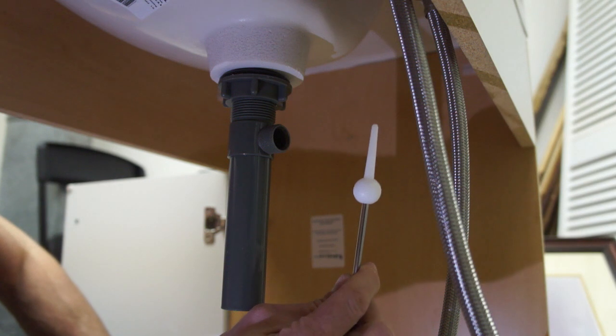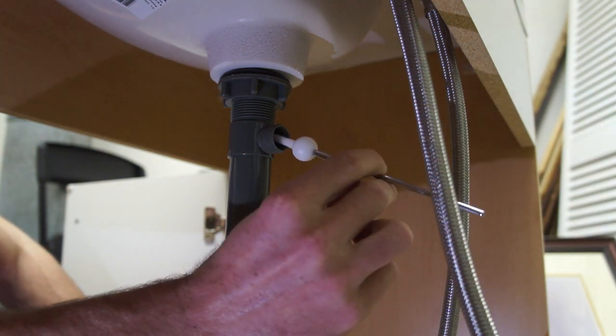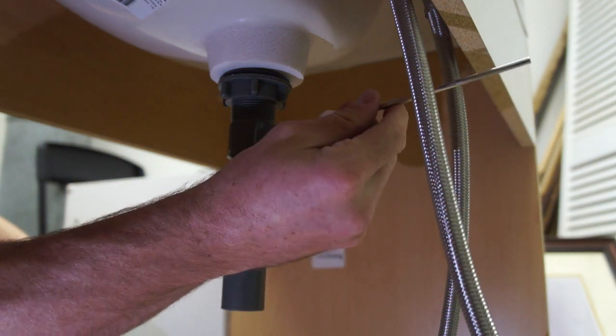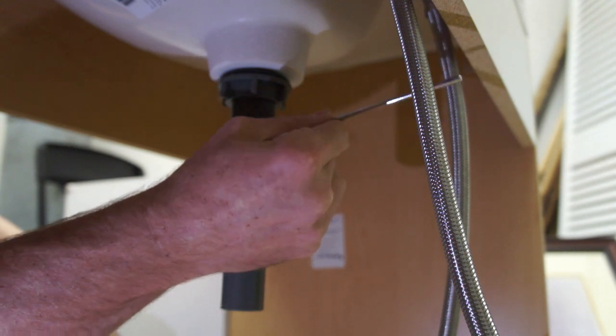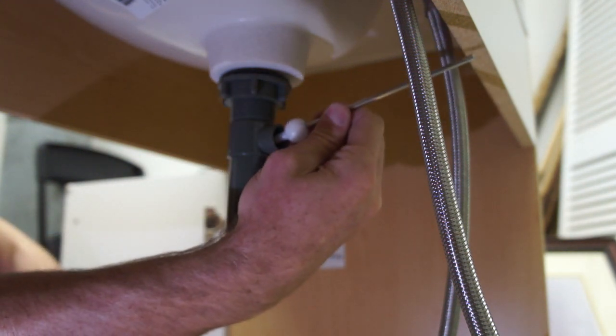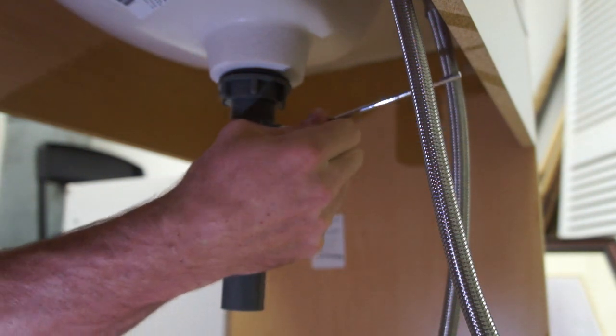Okay, we're going to put the stopper actuator rod piece into this hole in the back and when we do that, I'm wanting to get it through the loop on the stopper. So I've got to kind of go at a downward angle to get it in the loop. And then you can look up on top and see if it's going up and down.